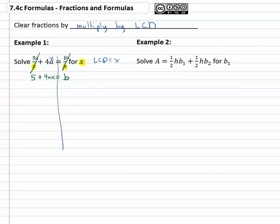And again we have a two-step equation, which we can solve by first getting rid of whatever's added or subtracted to x, and then dividing. In this case the 5 is added to the part with x, so we'll subtract 5 from both sides. This gives us 4ax equals b minus 5.